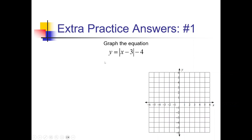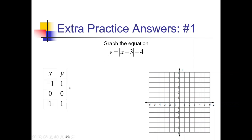For this first one we have the absolute value function. So we have (-1, 1), (0, 0), and (1, 1) — it graphs a nice little V initially. This plus 3 inside means we're shifting right 3, and outside changes are exactly what you expect — up or down — so we're going to go down 4. Inside is left/right, opposite of what you expect. Outside is up/down, exactly what you expect. Adding and subtracting is a shifting thing; multiplying stretches the function, and multiplying by a negative reflects it.